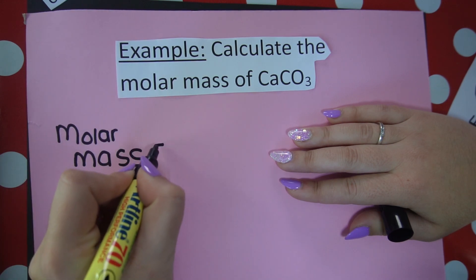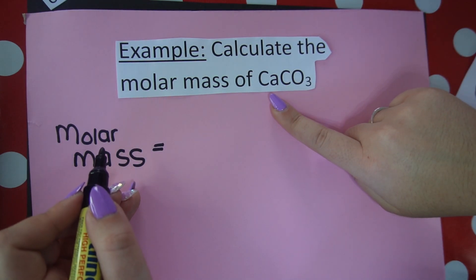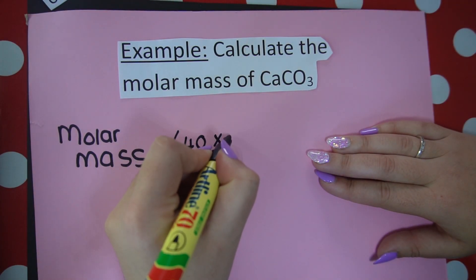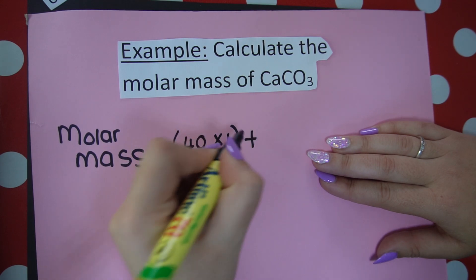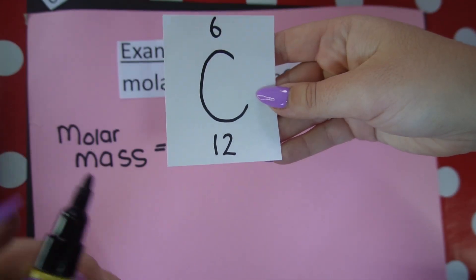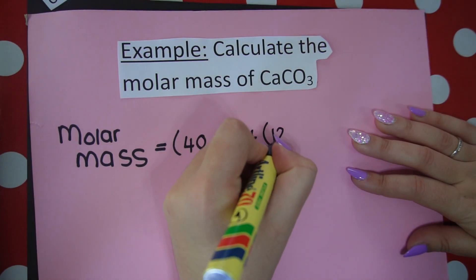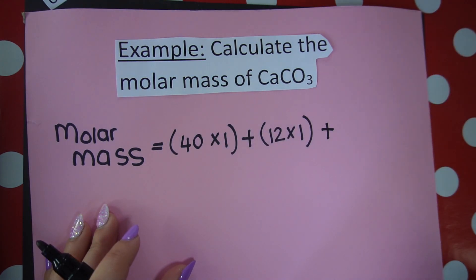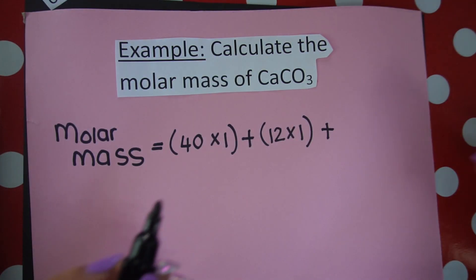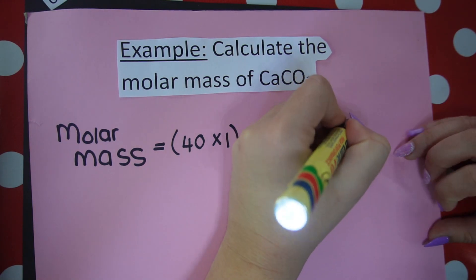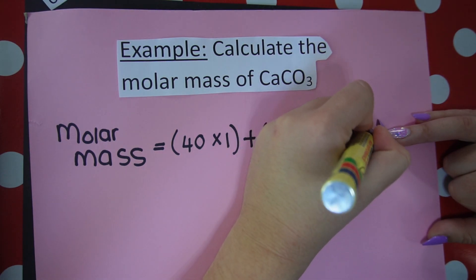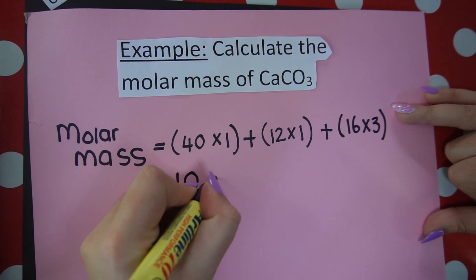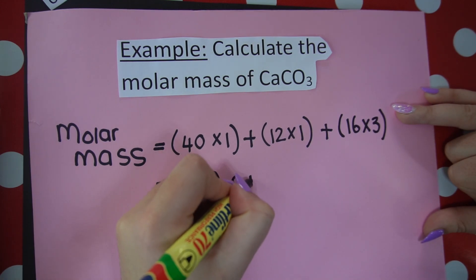Our molar mass is equal to: we've got 1 calcium, the atomic mass number of 40, so 40 times 1, plus carbon, an atomic mass number of 12, so 12 times 1, plus our oxygen has an atomic mass number of 16. But there's three oxygens. So we go 16 times 3. When we add all of those up, we're going to get 100 grams per mole.